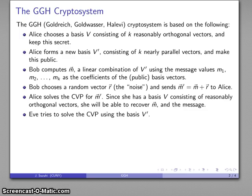On the other hand, let's say Eve tries to figure out what this message is. She has the message M prime and uses the public basis, the V prime—the nearly parallel vectors—and tries to find the closest vector to M prime. Because she's using these nearly parallel vectors, it's unlikely that she'll be able to solve the closest vector problem very efficiently.